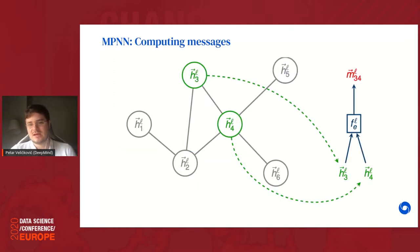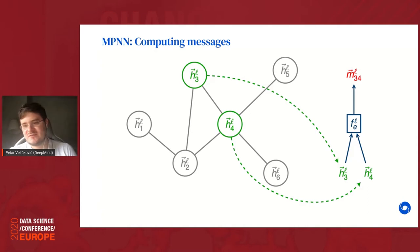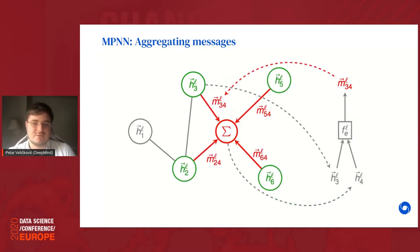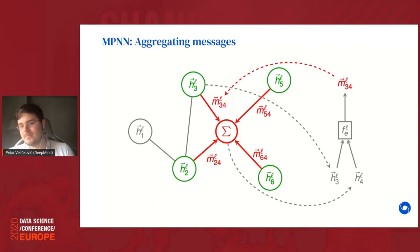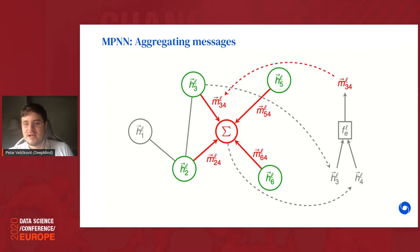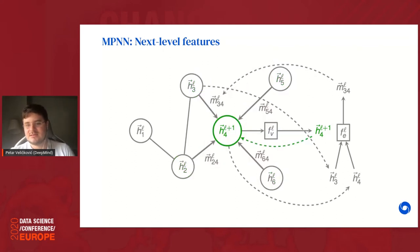As an illustration: to send a message from node 3 to node 4, we pluck out features of both nodes, feed them into f_e to produce message vector m_{34}. We do this in parallel for all nodes sending to 4 — computing m_{24}, m_{54}, m_{64} — then apply a permutation-invariant aggregation such as summation. The summed message and node 4's internal features are passed through the readout network to get updated features h_4′, which feed back into node 4, potentially after applying a non-linearity, for deeper layers.